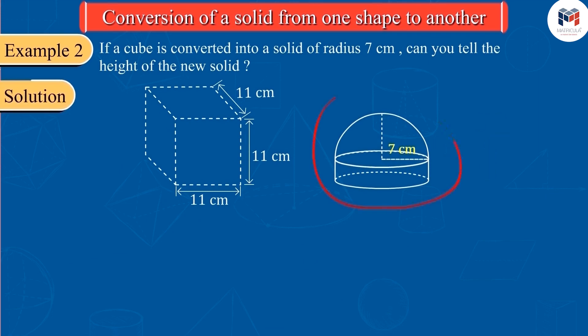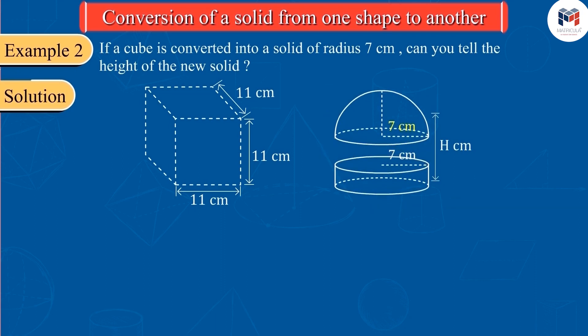Let the total height of this new solid made by Sanjana be capital H. From the picture, we can see that the new solid is made of a hemisphere and a cylinder. We can also see that the radii of these two solids are equal, that is, 7 cm.